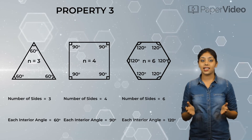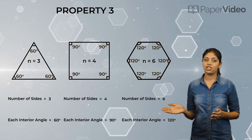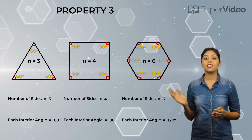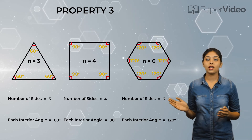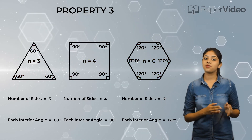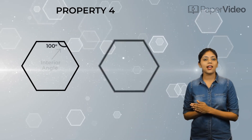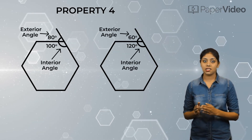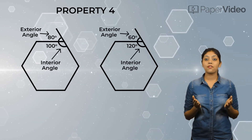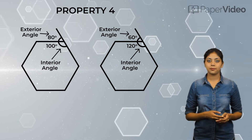Clearly, we can see that the value of each interior angle in a regular polygon is increasing with the number of sides. According to the fourth property, as the value of the interior angle increases, the value of the exterior angle decreases.